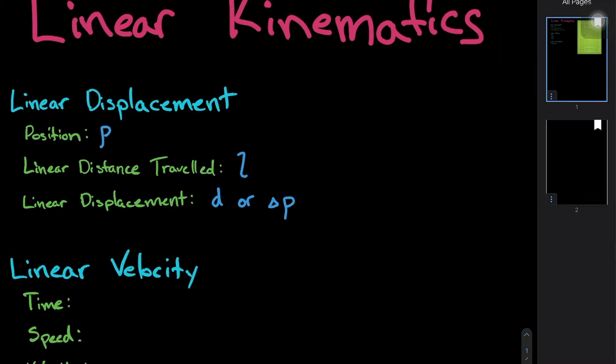Linear distance traveled is a scalar quantity, whereas linear displacement is a vector quantity. Remember that a unique property of vectors is that they have both a magnitude and a direction. If we're just measuring the entire path a person took, we can't really tell which direction they were going at any given point, so it's scalar — just the magnitude. Linear displacement, because it goes from initiation of movement to the endpoint in a straight line, does have a direction, so it's a vector quantity.